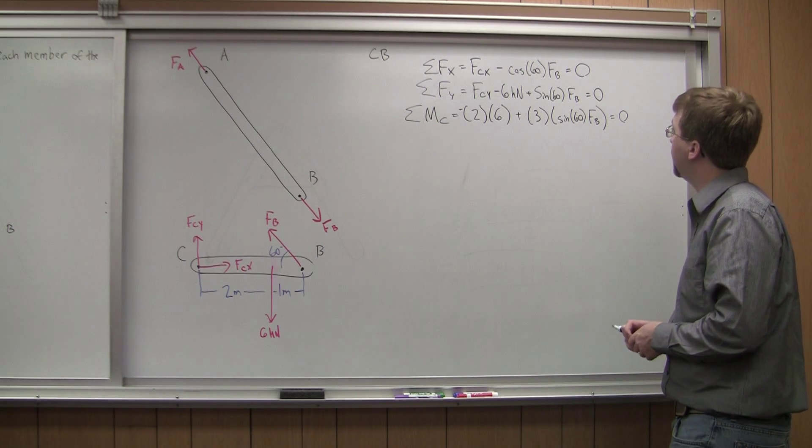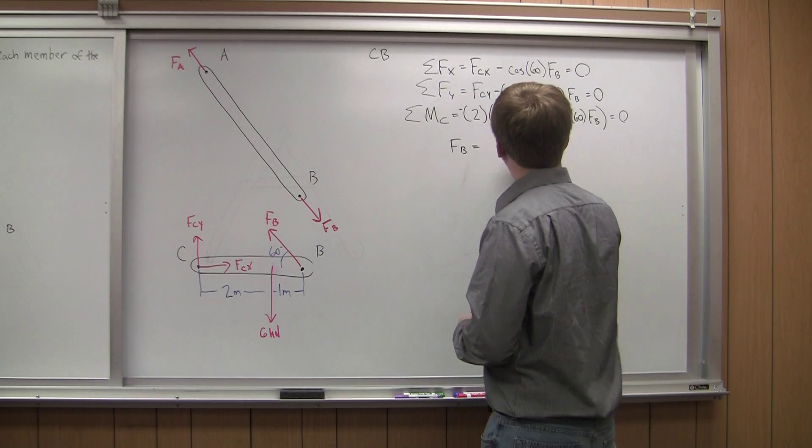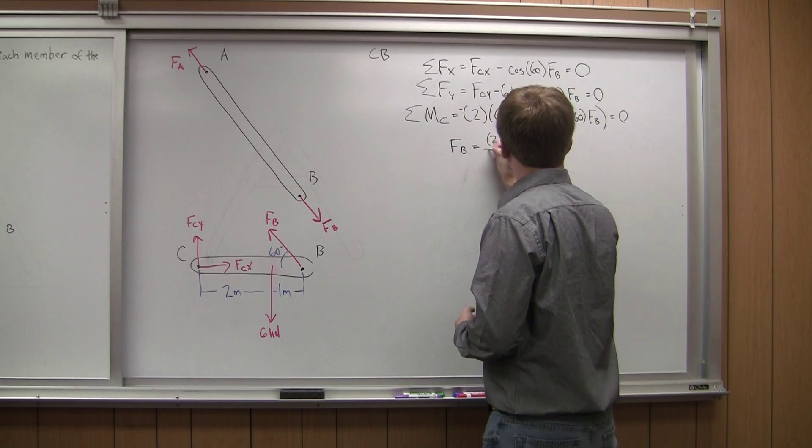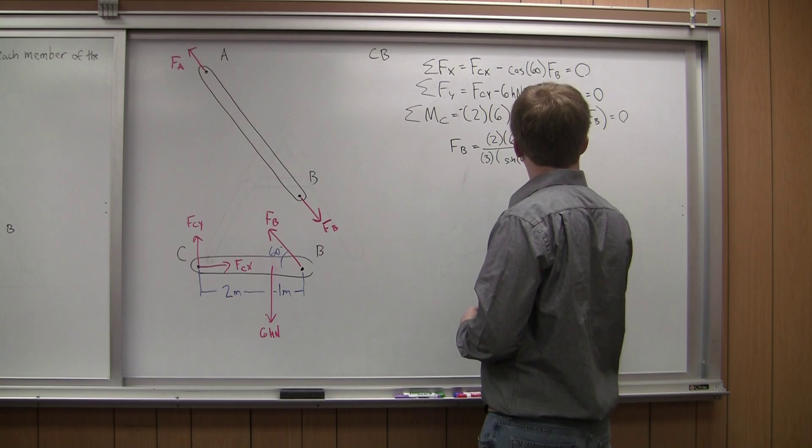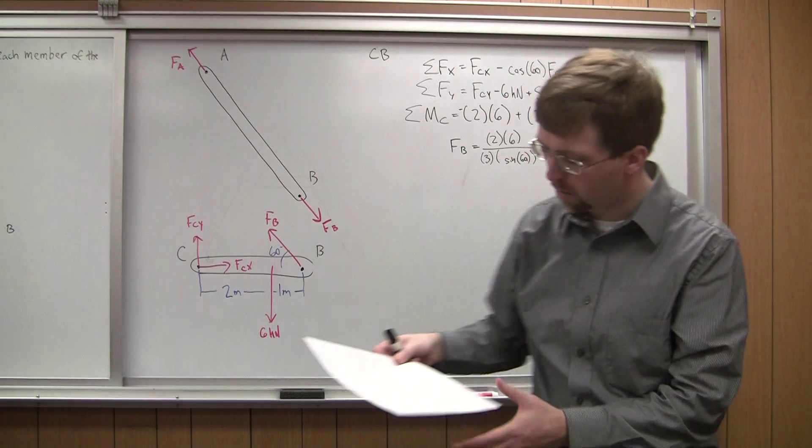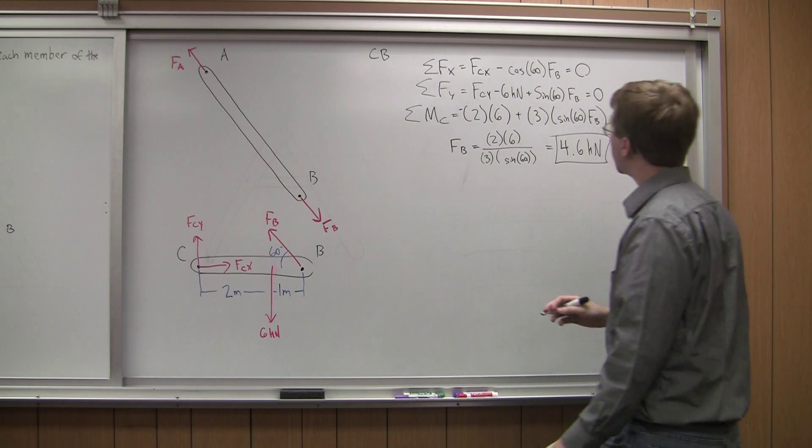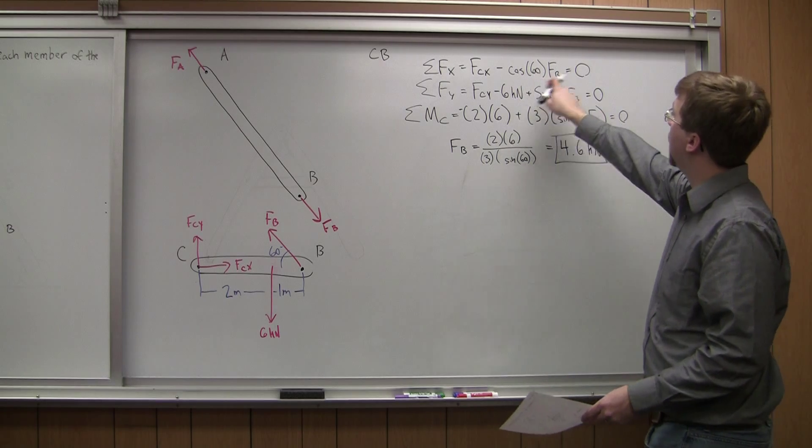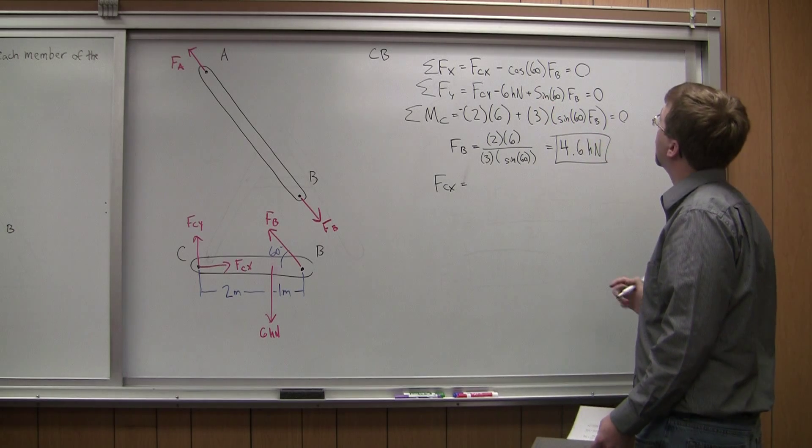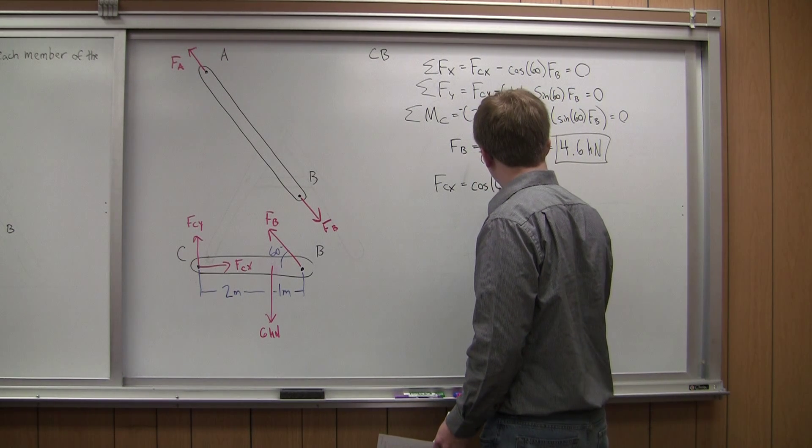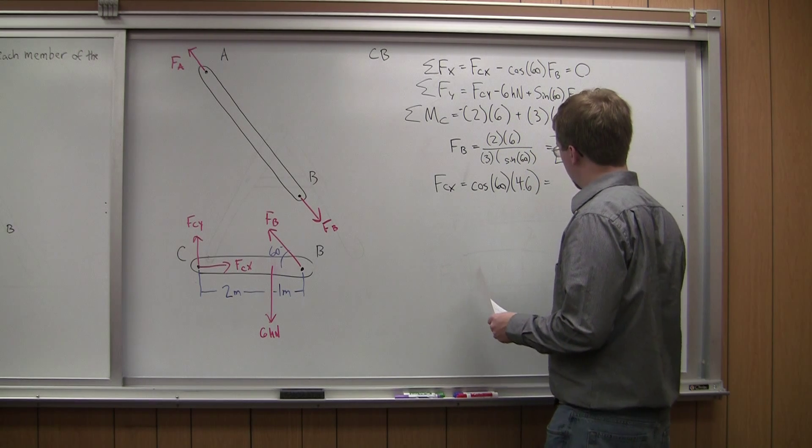Alright, so easiest one to start with is going to be my moment equation. I've only got one unknown there. So FB is going to be equal to 2 times 6 divided by 3 times the sine of 60. And that will give me a number of 4.6 kilonewtons for FB. Alright, so if I go back and now I'm going to look at sum of forces in the x direction. I'm going to get FCX is going to be equal to cosine 60 of FB. So cosine 60 times this value 4.6 is going to be equal to 2.3 kilonewtons.